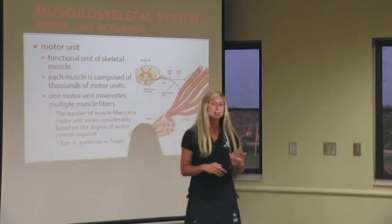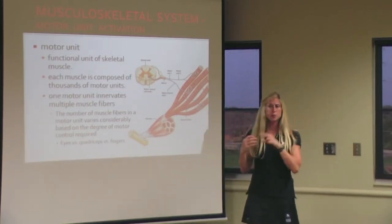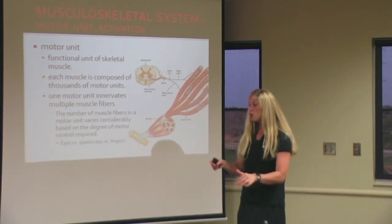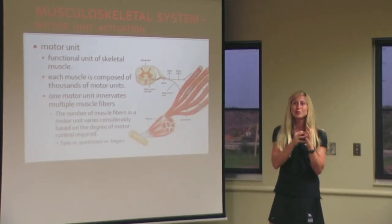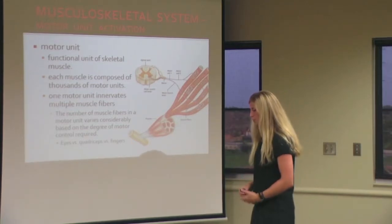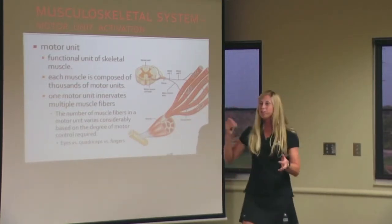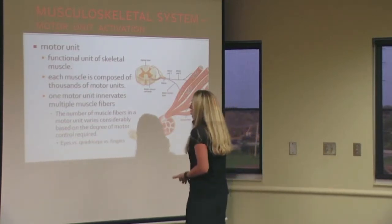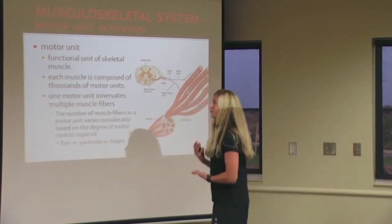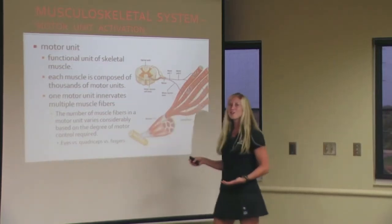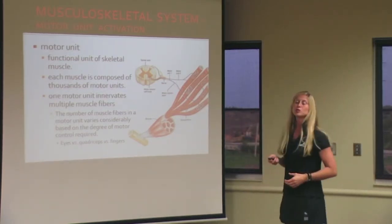For example: the eyes versus the quadriceps versus the fingers. Our eyes do many different things — focusing, changing, blinking, moving — very intricate. What we do with our hands is still intricate, but a little less so. Our quadriceps, on the other hand, have one job: they extend the knee joint. There's a lot of muscle and a lot of force, but the movement itself is not as intricate as the eyes and fingers. So it needs less precision — it has more muscle fibers per motor unit.